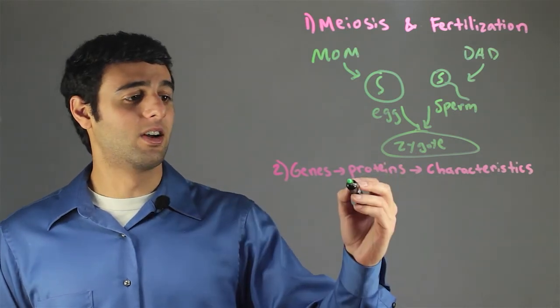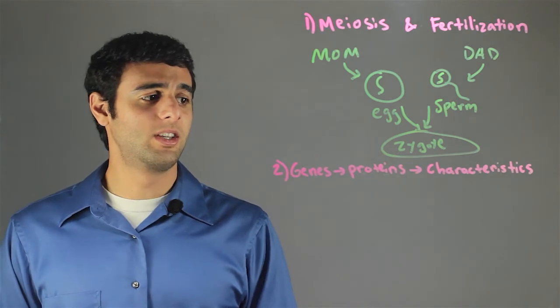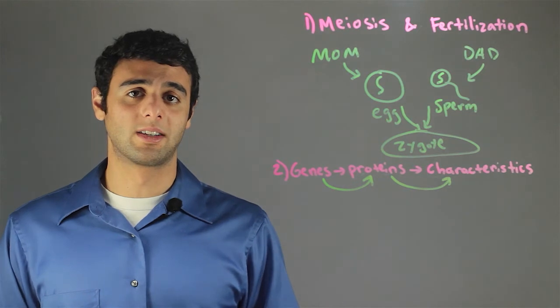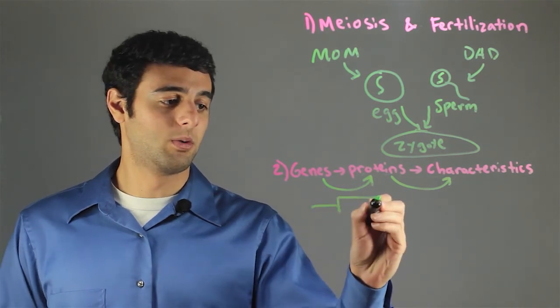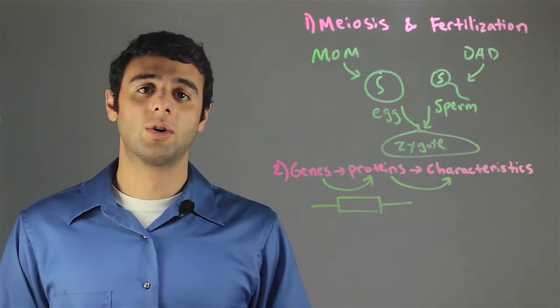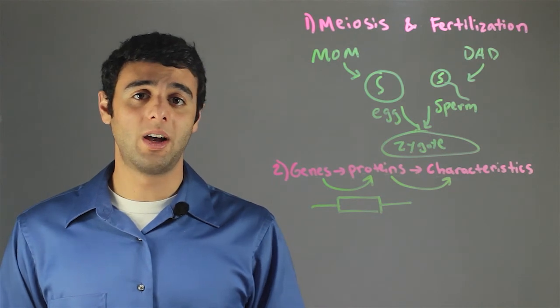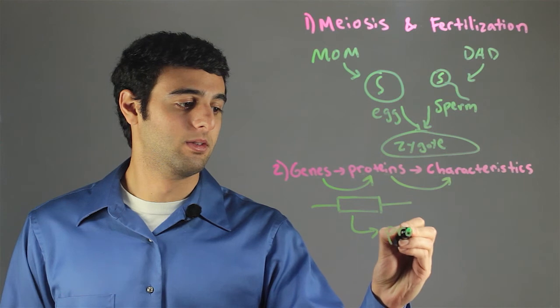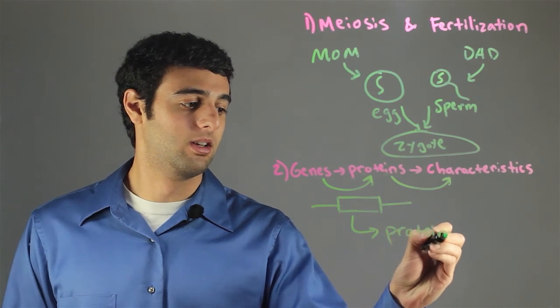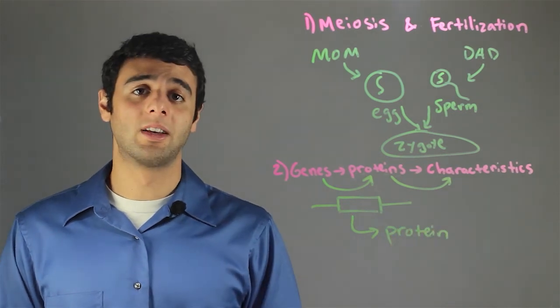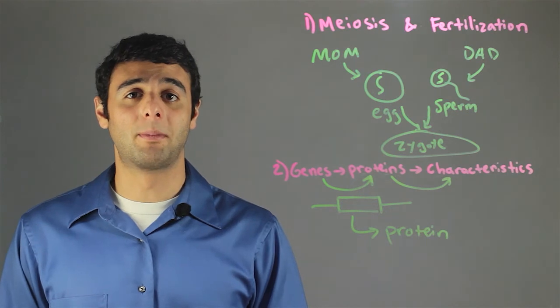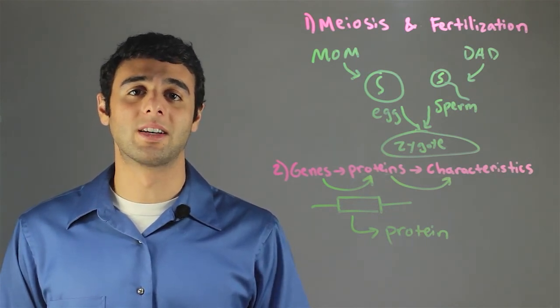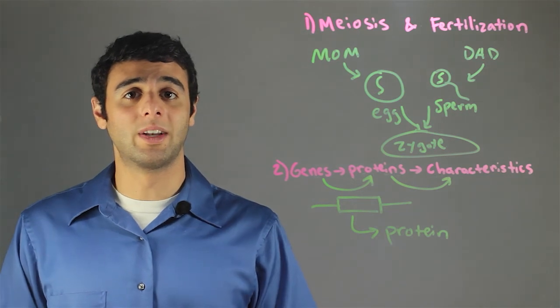Our second concept is genes to proteins to characteristics. So we have a gene, which is then transcribed and translated into a protein. This protein can then have several different biological functions to influence characteristics in the human body or in any species.